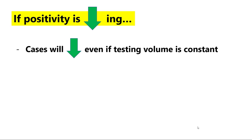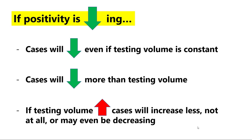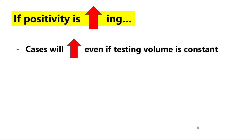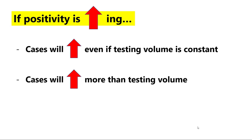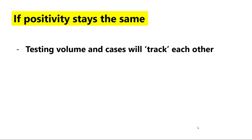In summary: if positivity is decreasing over time, cases will decrease even if testing volume is constant; cases will decrease more than testing volume if testing volume is going down; and if testing volume is going up, cases will either increase less than testing volume, stay the same, or may even decrease. On the flip side, when positivity is increasing, cases will increase even if testing volume is constant; cases will increase more than testing volume if testing is rising; and even if testing volume decreases, cases will decrease less, not at all, or may actually increase. If positivity stays the same, testing volume and cases track together at approximately the same rate.